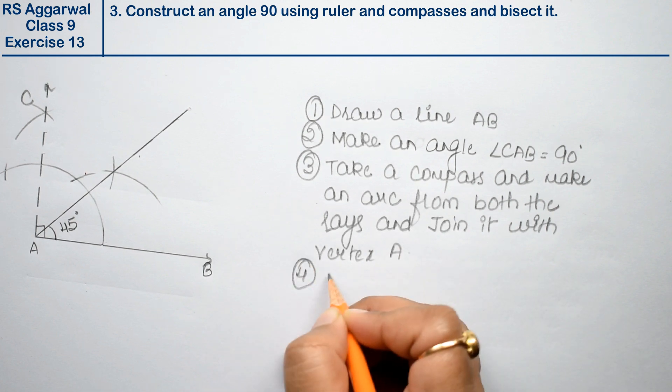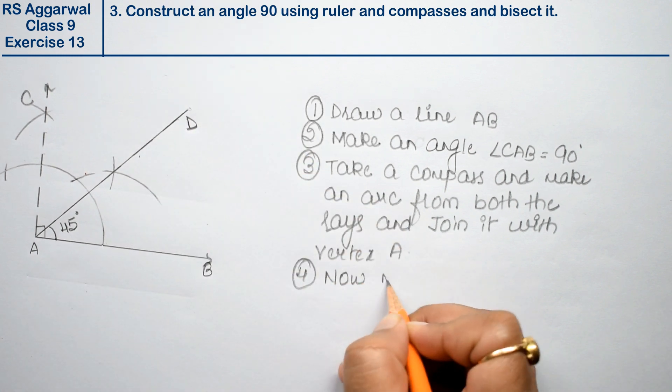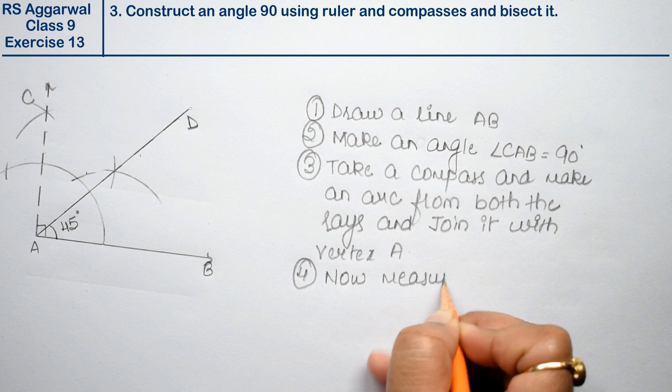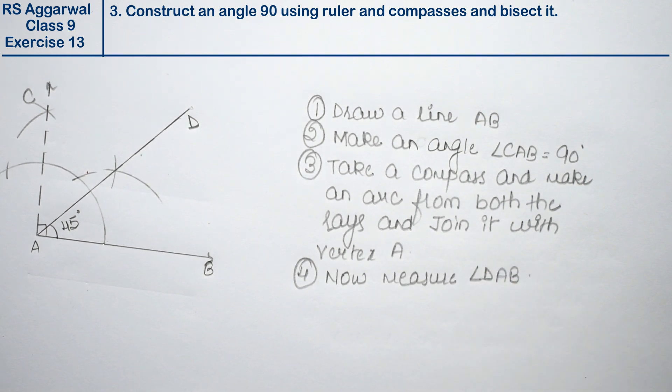Fourth, we have made point D. Now measure angle DAB. Answer.